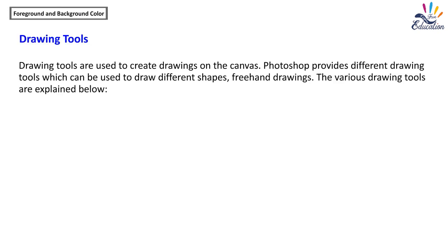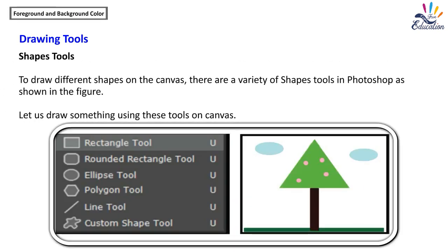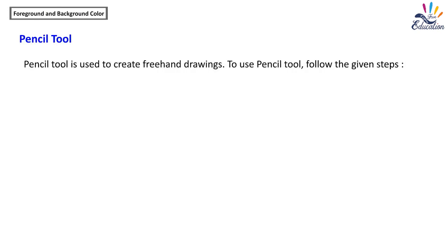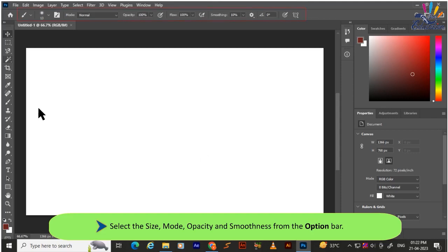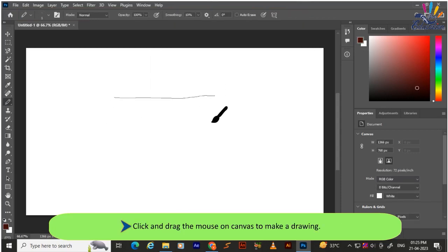Drawing tools are used to create drawings on the canvas. Photoshop provides different drawing tools for various shapes and freehand drawings. Shape tools include Rectangle tool, Rounded Rectangle tool, Ellipse tool, Polygon tool, Line tool, and Custom Shape tool. The Pencil tool is used to create freehand drawings — select it, choose size, mode, opacity, and smoothness from the Options bar, select the foreground color, then click and drag the mouse on the canvas to draw.